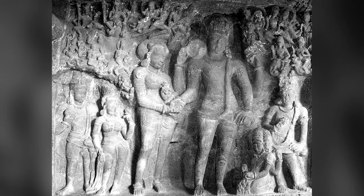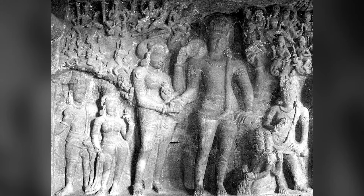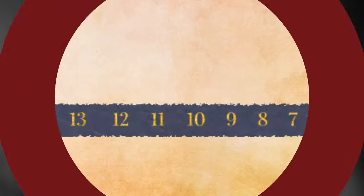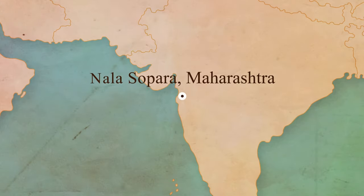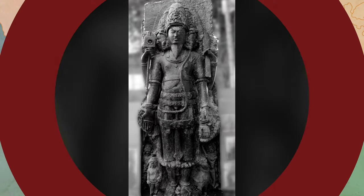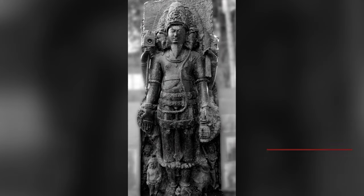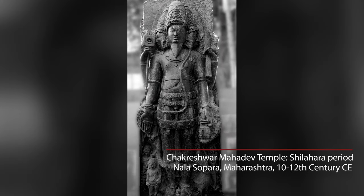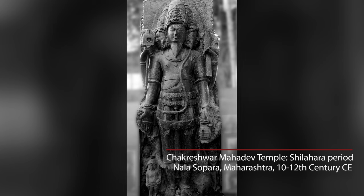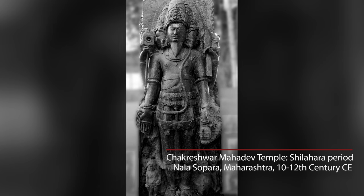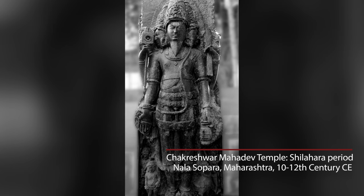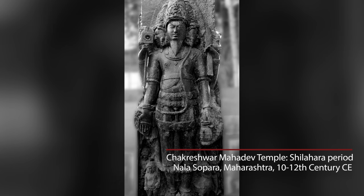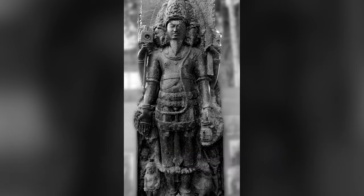And finally, in the Shilohara period, around the 10th and 11th century, along the western coast of India, we find temples with independent images of Brahma — four heads, four arms, independently standing.